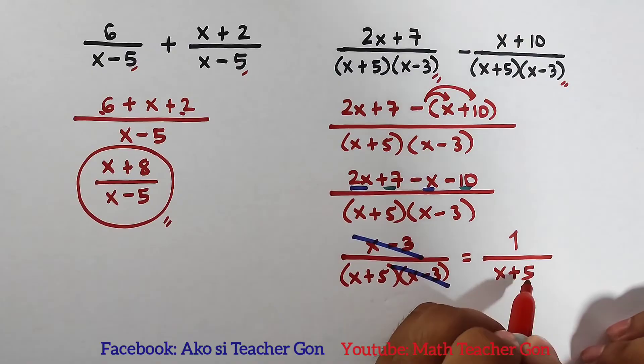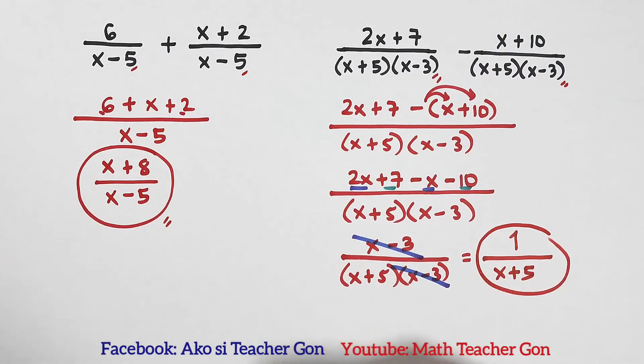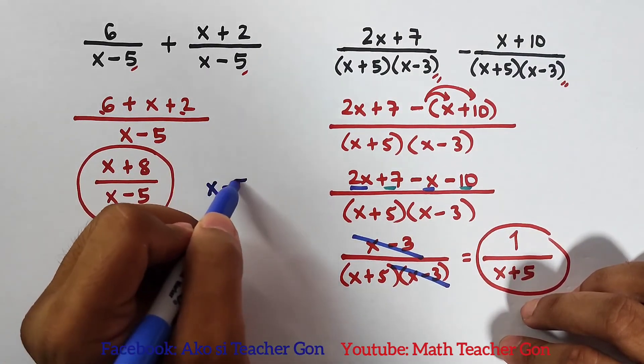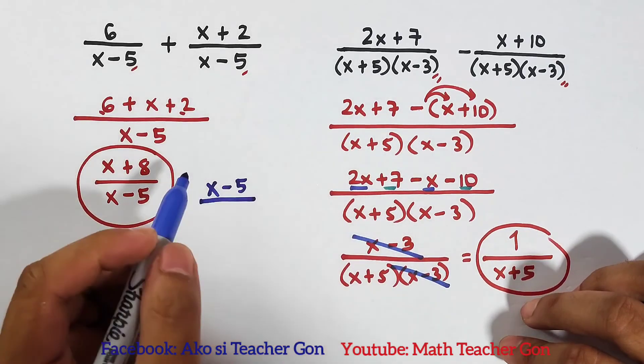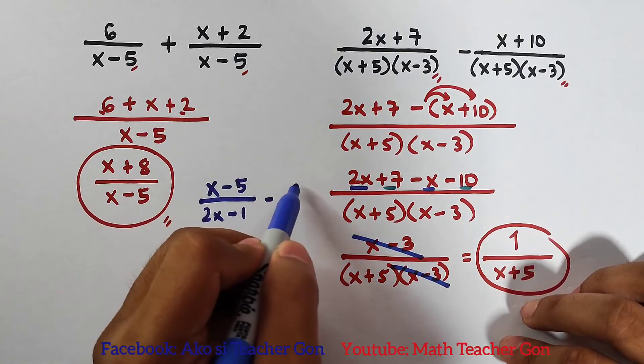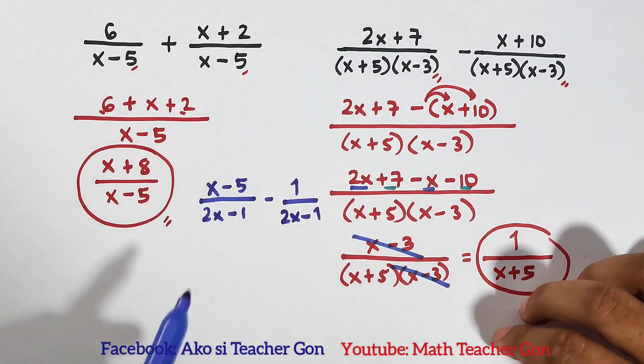And this is now the answer for item number two. So that's it guys, I hope you learned something from this video. And as part of our routine, I will give you an activity wherein you need to add or you need to subtract the given expression. And here's the given expression we have: 2x minus 5 over 2x minus 1 minus 1 over 2x minus 1.